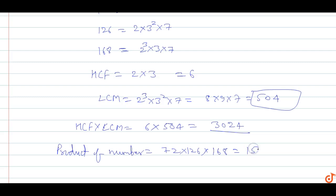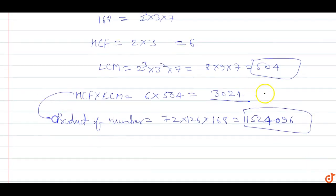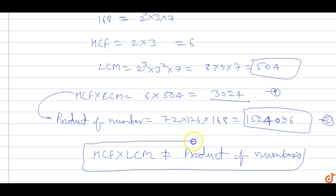The product of these three numbers is 1,524,096. From equation 1 and equation 2, we can say that the product of HCF and LCM is not equal to the product of the numbers. So the product of LCM and HCF is not equal to the product of the numbers.